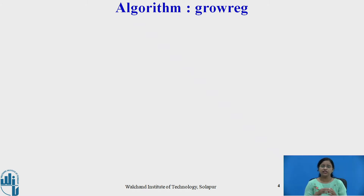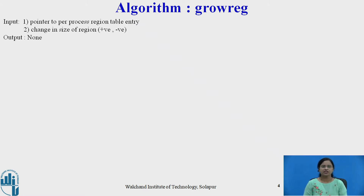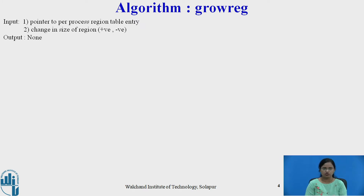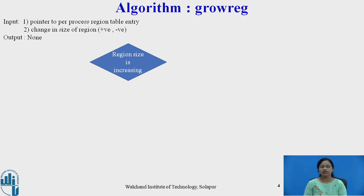For increasing the size of a region, the kernel uses the grow region algorithm. The input to this algorithm is: first, a pointer to the per-process region table entry; and second, the change in size — whether that size is positive (expand) or negative (contract). The output is the increased region; it does not return anything, which is why it is written as none.